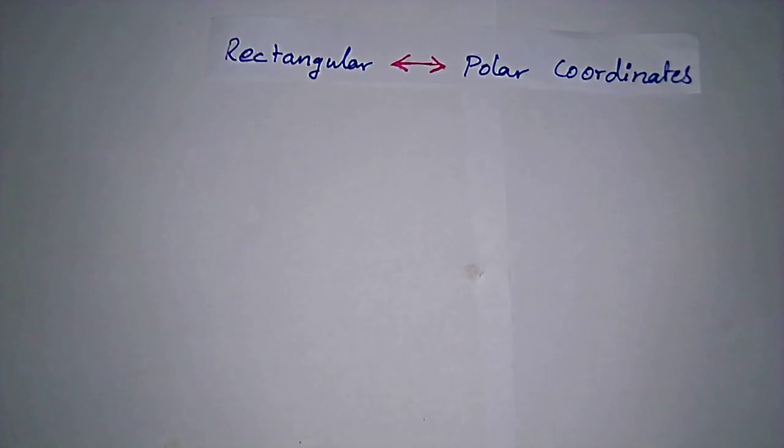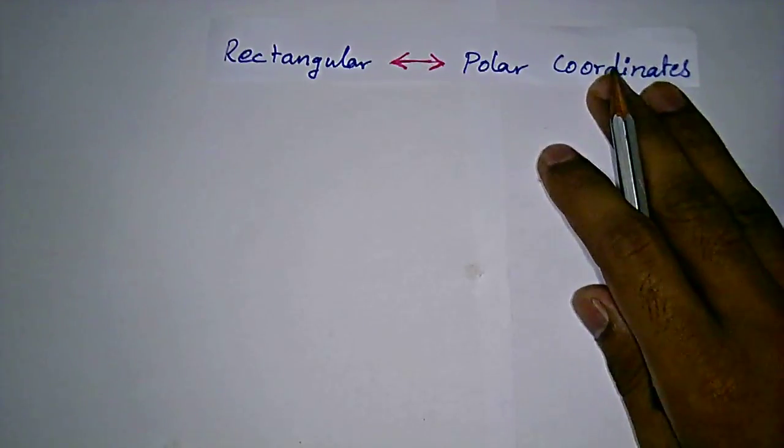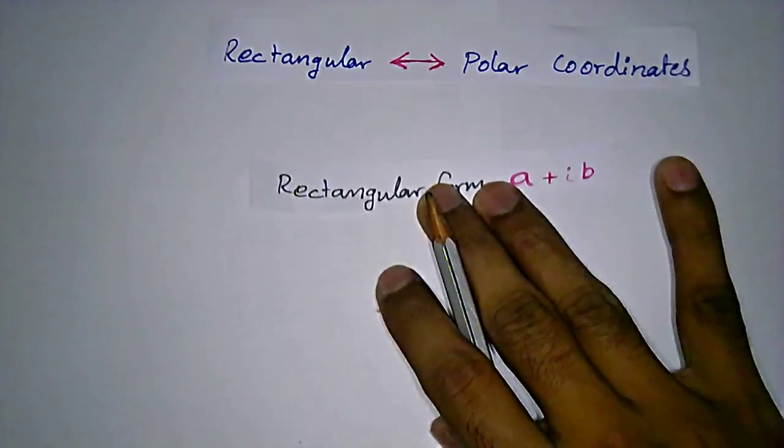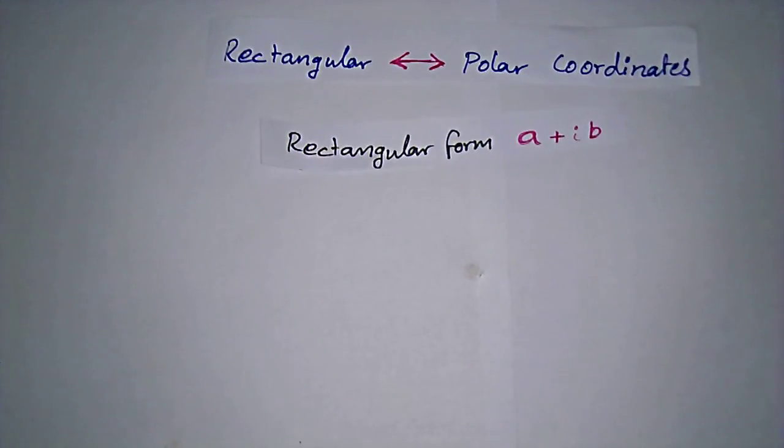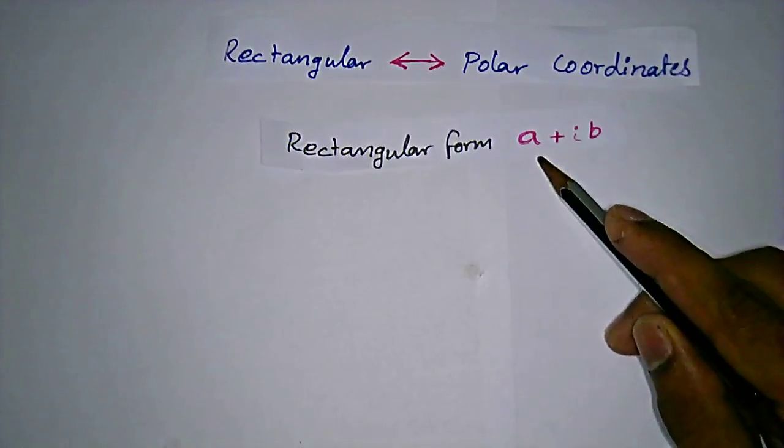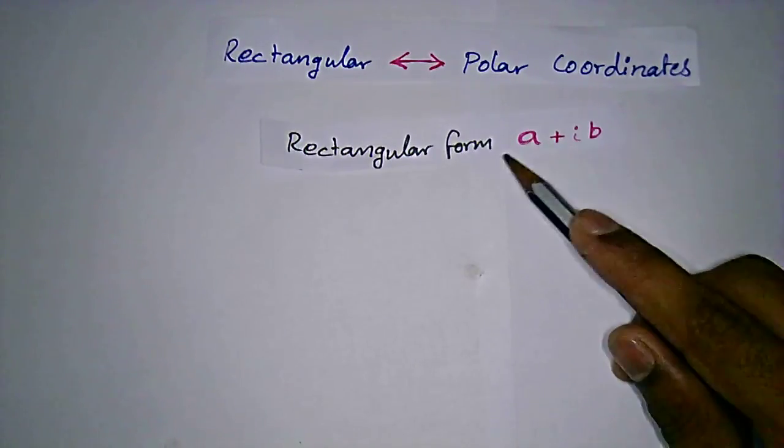Now we are going to see how to change coordinates between rectangular to polar and polar to rectangular. What kind of form will be in the rectangular coordinates? It will be a real part with imaginary part value - that is rectangular.